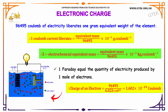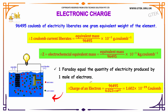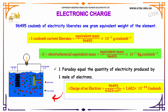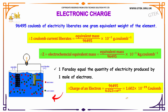One Faraday equals the quantity of electricity produced by one mole of electrons. Therefore, the charge of one electron equals 96,495 divided by 6.023 × 10²³, which equals 1.602 × 10⁻¹⁹ coulombs.